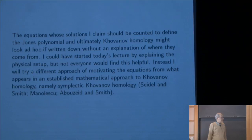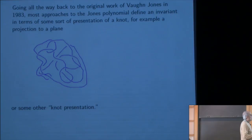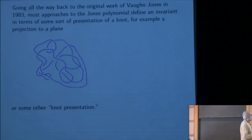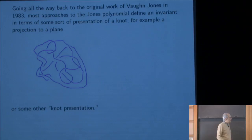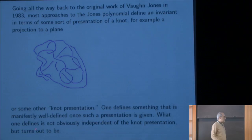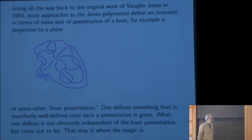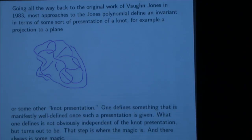Going all the way back to the original work of Vaughan Jones in 1983, most approaches to the Jones polynomial of a knot in 3-space define an invariant in terms of some sort of presentation of a knot — for example, a projection to a plane. One defines something that's manifestly well-defined once a presentation is given. What one defines is not obviously independent of the presentation, but turns out to be. That step is where the magic is: you show that whatever weird thing you've defined miraculously obeys the right Reidemeister relations.